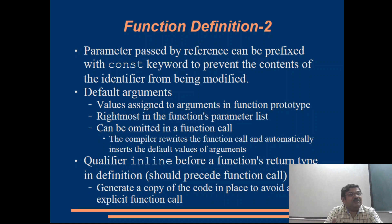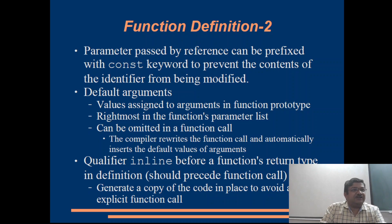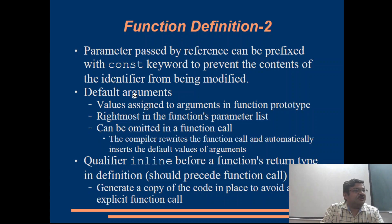The const qualifier indicates that this is to be treated as a constant — it can only be accessed as read-only memory; nothing can be overwritten on that storage. Without the const keyword it is open access — you can both read and write to that location when the argument is passed by reference. The default is of course pass by value, which we have already seen.